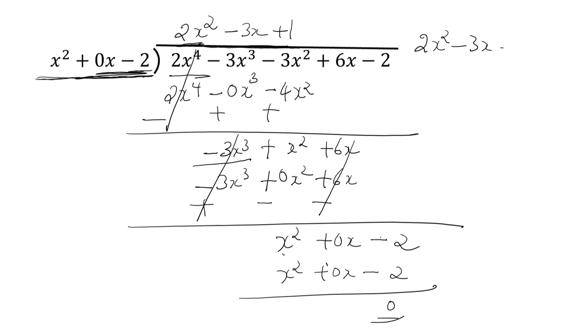2x square minus 3x plus 1 is equal to 0. By splitting the middle term method. 2 into 1 is 2, 2 plus 1 is 3. So minus 2x and minus x. Here 2x square, here 1. Now here 2x is common, x minus 1. Here minus 1 is common, x minus 1.